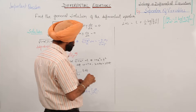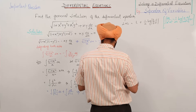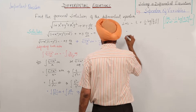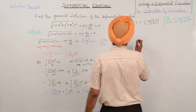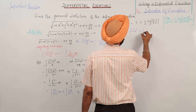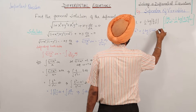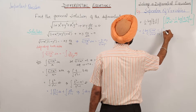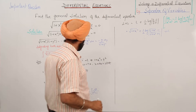Now substituting back the value of t, where t equals square root of 1 plus x square: the left hand side result is square root of 1 plus x square plus 1 upon 2 log of square root of 1 plus x square minus 1 upon square root of 1 plus x square plus 1.